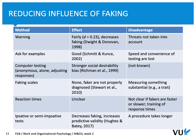The method of asking candidates to provide examples can nicely reduce faking. However, the problem is that it may substantially slow the personnel selection process. If a candidate takes a personality test with 100 items and is asked to provide examples for each, you end up with very long responses and the selection process takes a lot of time. Computer testing involving anonymity and working alone was proven to actually increase faking — so it is not a good method.